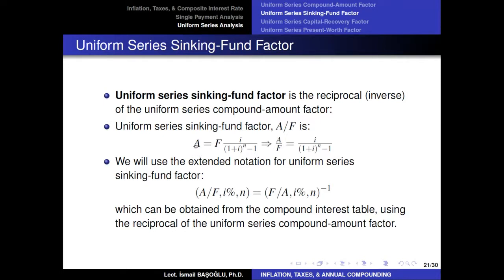The relationship between A and F was already constructed. We are now writing the annual installment size in terms of the future value. The formula multiplying F to calculate the annual installment size is called the uniform series sinking fund factor. This is the multiplicative inverse of the uniform series compound amount factor, so A over F equals i divided by (1 plus i to the power N minus 1).